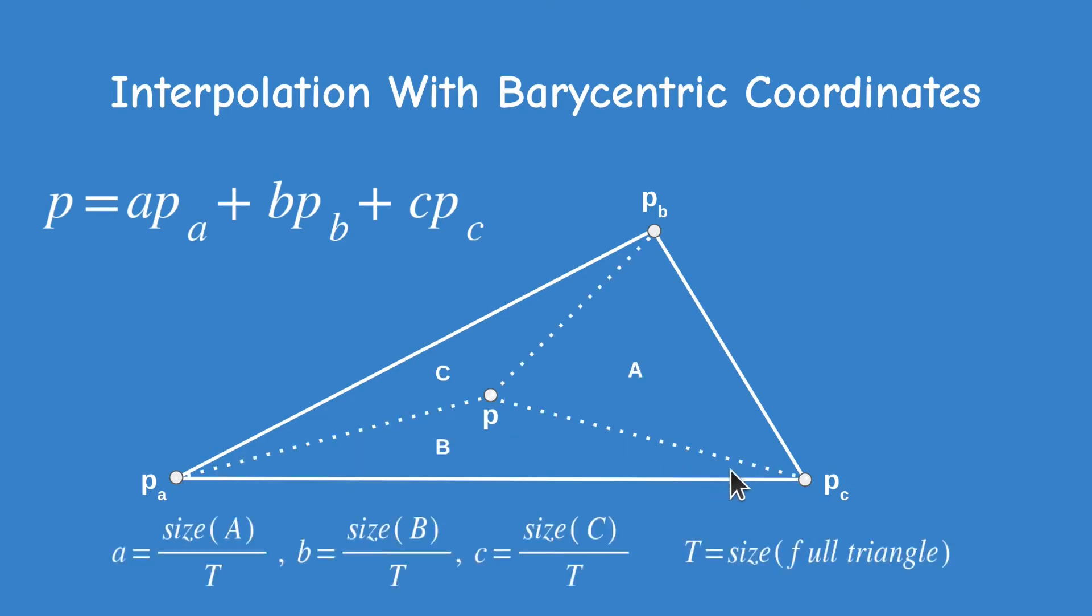To do that we draw lines from each vertex to point P. This divides the triangle into three smaller triangles named A, B and C in uppercase. The barycentric coordinates can now be calculated as the ratio between the size of each smaller triangle and the size of the full triangle, as we can see in this equation down below.